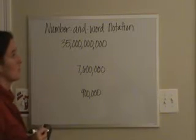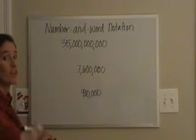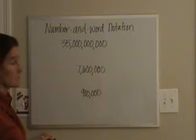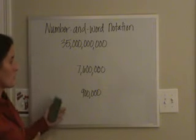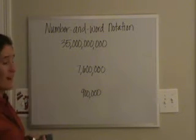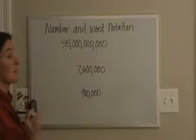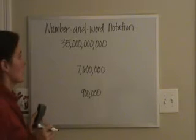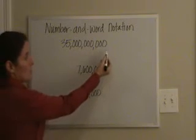Number and word notation is used when we're writing very large numbers. I've written three numbers here on the board. This first one is 35 billion, and I've written it in standard notation.